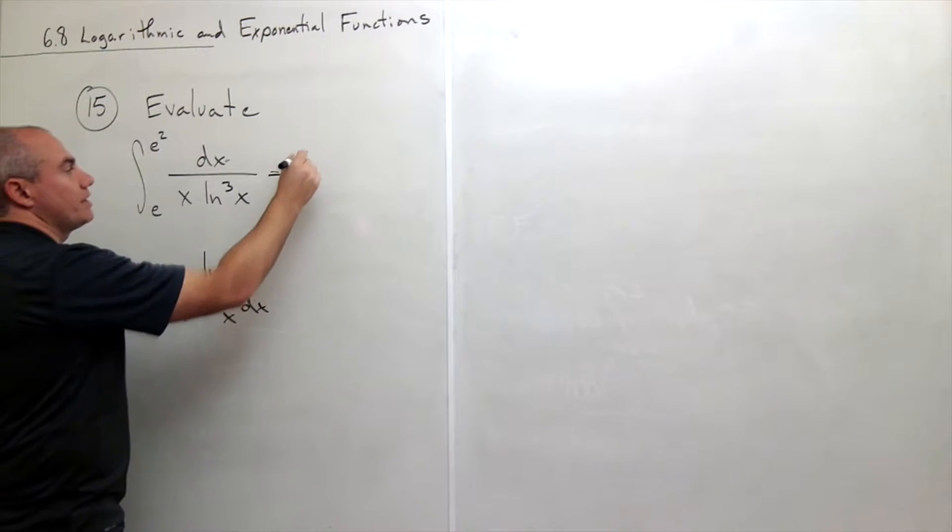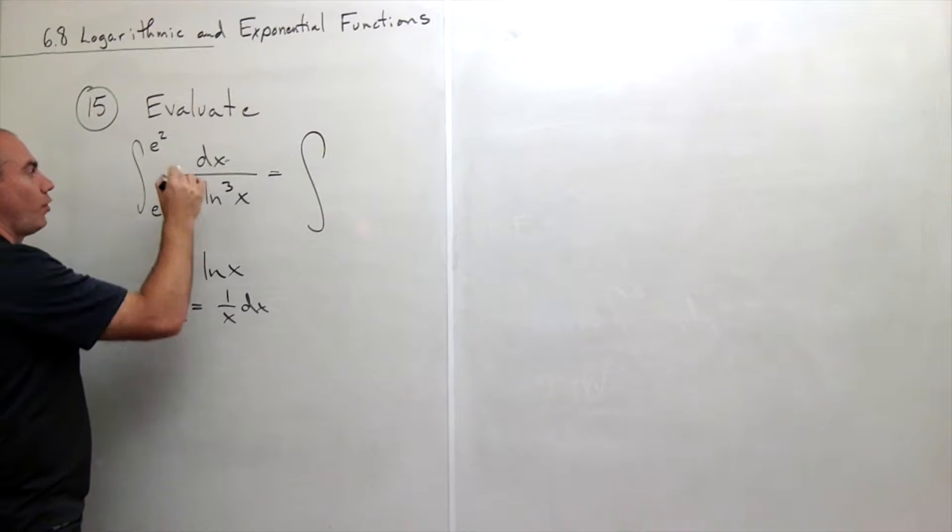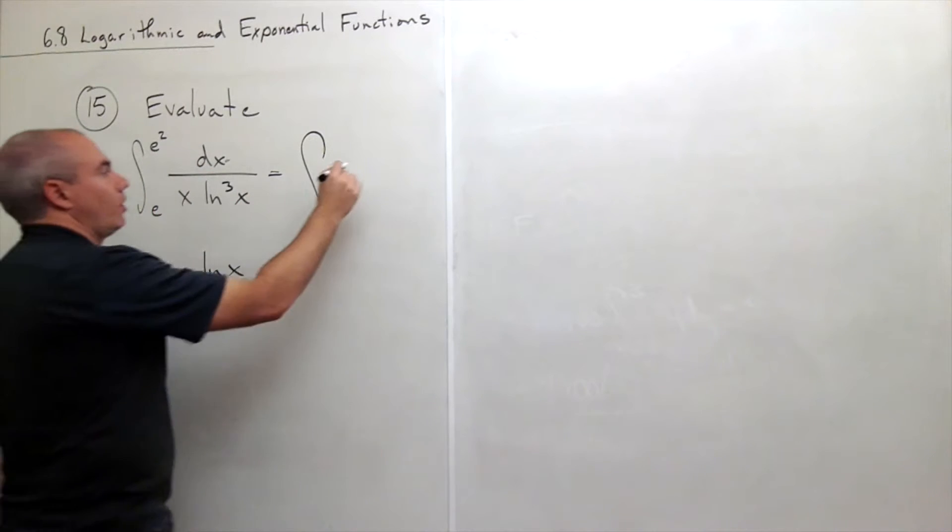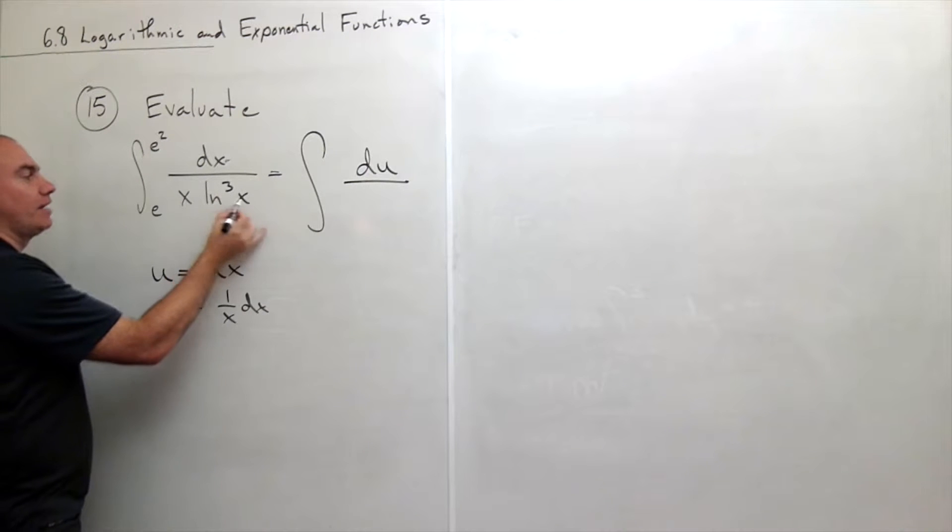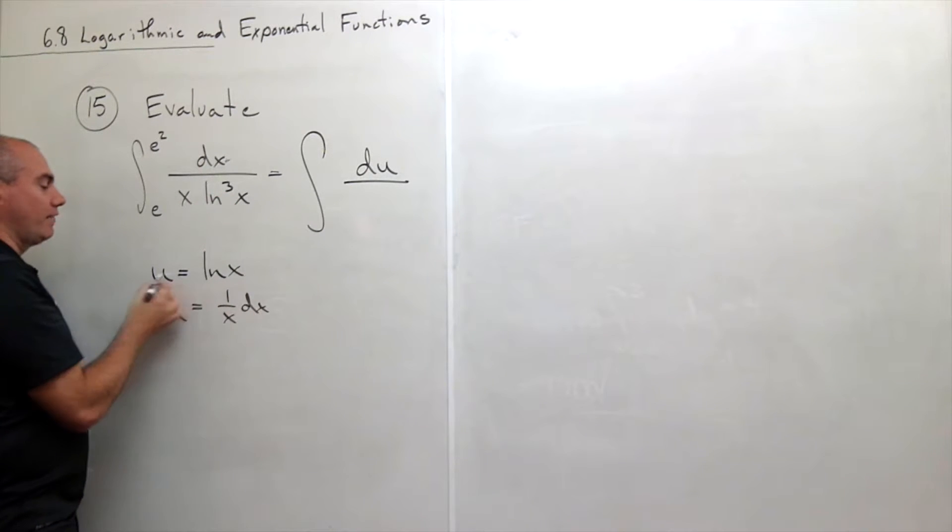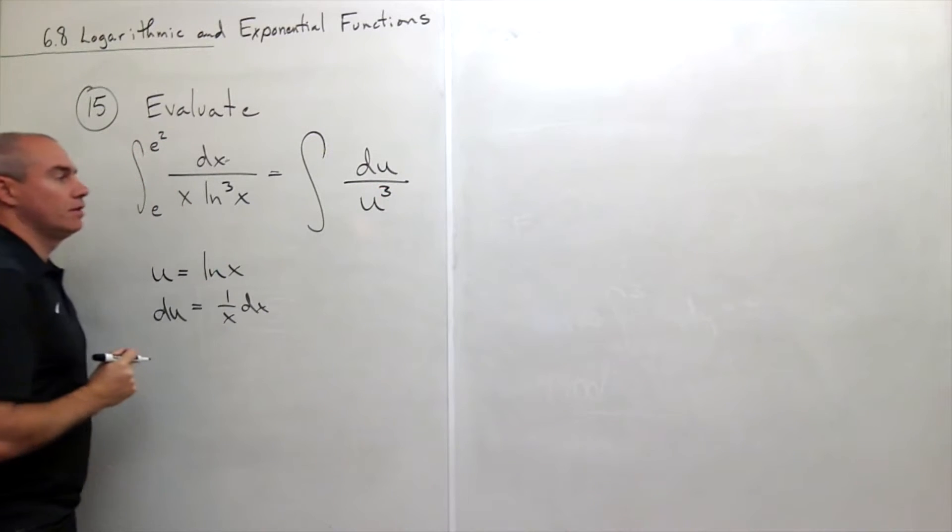So we can rewrite this integral as the integral of, the 1 over x dx all becomes my du and on the bottom I have ln of x cubed. Well ln of x is my u so I have u cubed on the bottom.